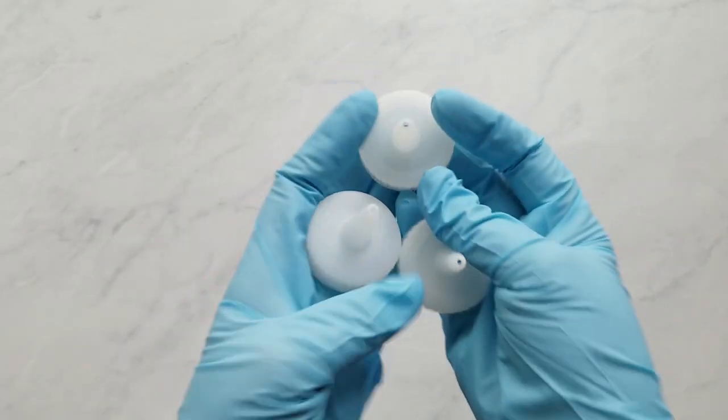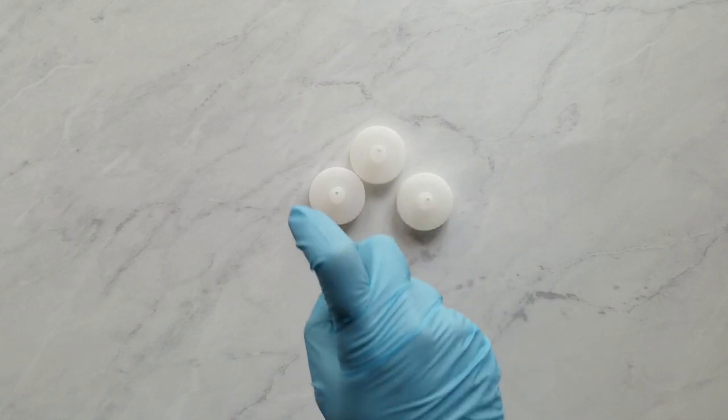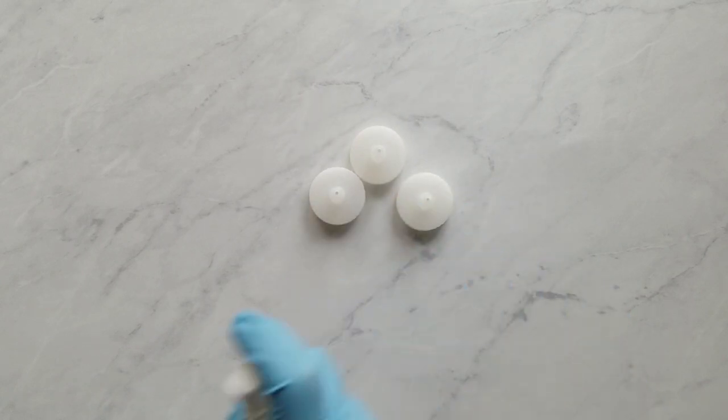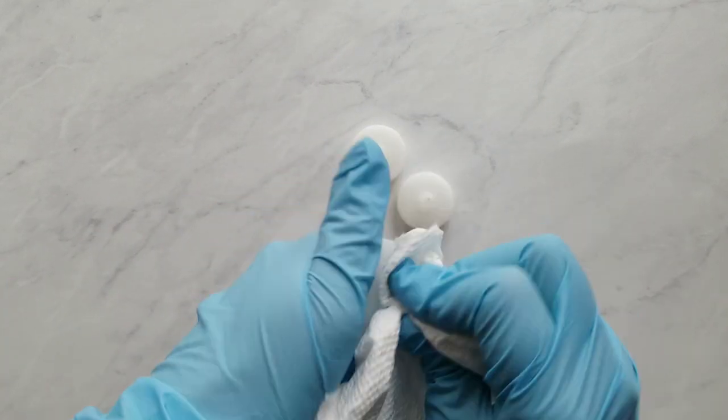Before we get started with the liners, I clean the tips of the squeeze bottles with isopropyl alcohol and I dry them off very well just to make sure that the tape will adhere to them.